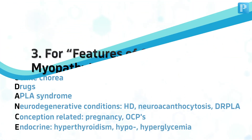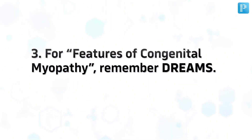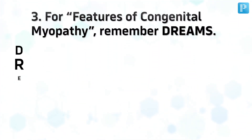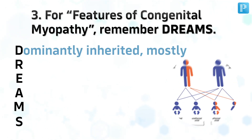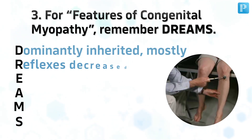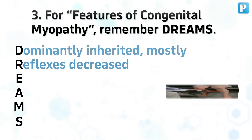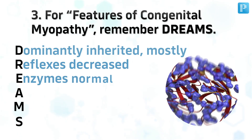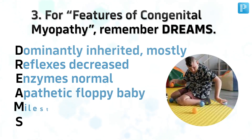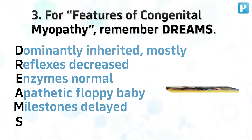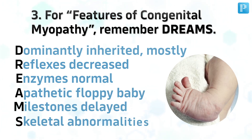Number 3. Features of congenital myopathy — remember DREAMS: Dominantly inherited mostly, Reflexes decreased, Enzymes normal, Apathetic floppy baby, Milestones delayed, Skeletal abnormalities.